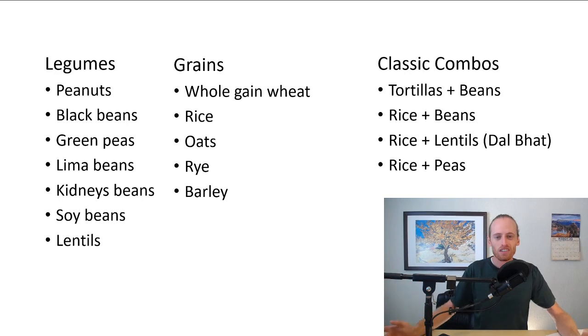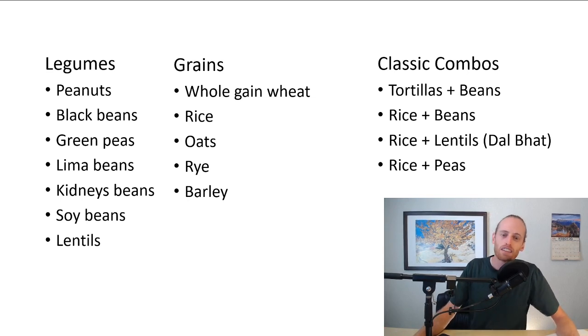When I went to Nepal, they make like a lentil soup with rice. It's called dal bhat. You dip the rice in the lentil soup. Super good. I recommend anybody out there trying dal bhat. I am a big fan. I was a vegetarian for three weeks when I was in Nepal. I went very hard on dal bhat. Rice and peas as well. Think about these classic combos. If you are a vegan, they're going to help you get all those essential amino acids.